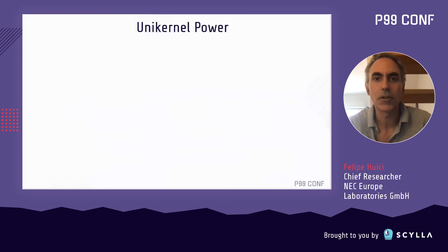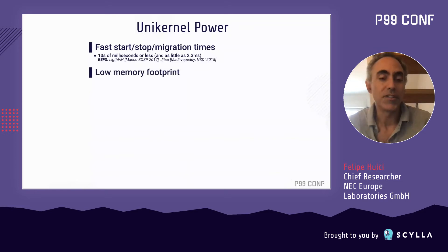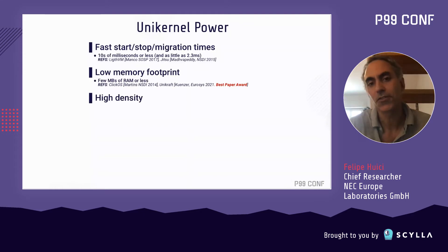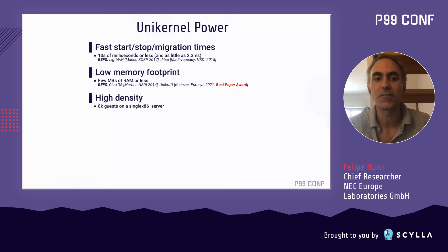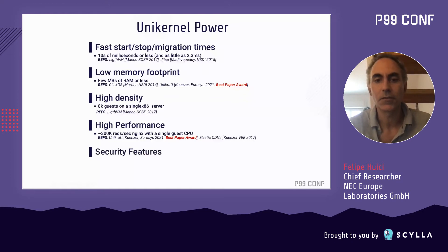Just to give you a little taste of what a unikernel can actually do: you can have fast start, stop, and migration times — papers have shown that a unikernel, which is essentially a virtual machine, can start in as little as two milliseconds. You can have very low memory footprints, running actual applications such as SQLite in a few megabytes or less. You can have high density — papers show you can consolidate as many as 8,000 guests on a single x86 server. And you get high throughput such as 300,000 requests per second out of a single core for Nginx workloads. Finally, it has security features as well.